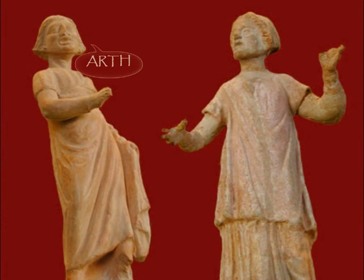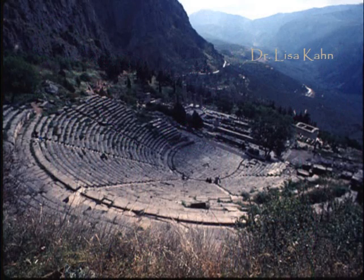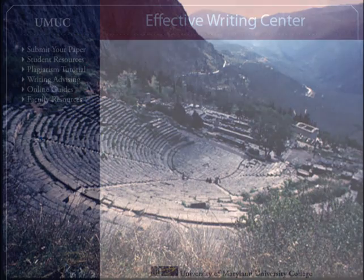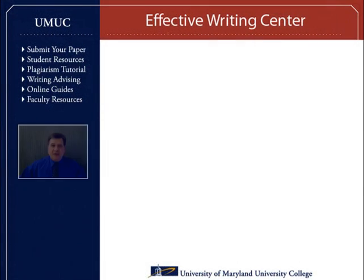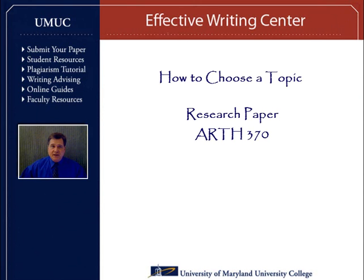An ancient Chinese proverb tells us the longest journey begins with the first step. The truth of that saying has never been more clear than when it comes to writing your research paper. The first step in writing a research paper is to choose your topic. This critical first step will determine what direction you take and how long it requires you to reach your goal of a polished paper.